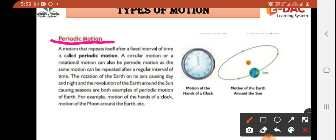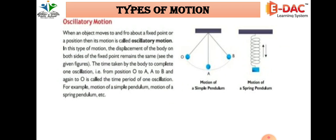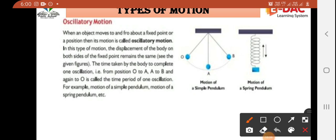Next is oscillatory motion. When an object moves to and fro about a fixed point or position, its motion is called oscillatory motion. In this type of motion, the displacement of a body on both sides of the fixed point remains the same.